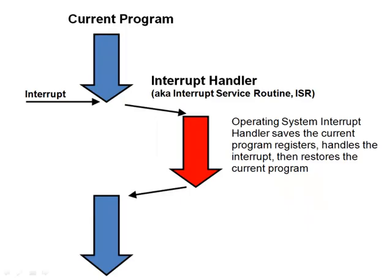In practice, the current program runs normally until an interrupt signal is received by the CPU, which causes the operating system to start an interrupt handler. This special program saves what the current program was doing, saves all register values and data, deals with and responds to the interrupt signal, and then restores the current program and carries on from before.